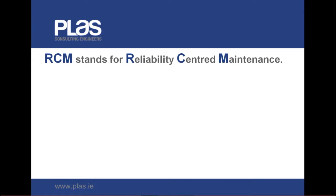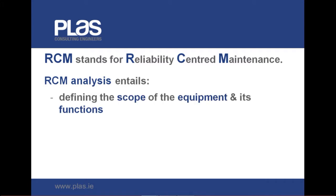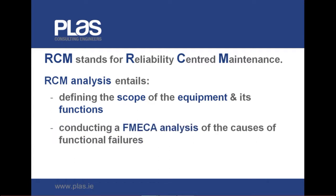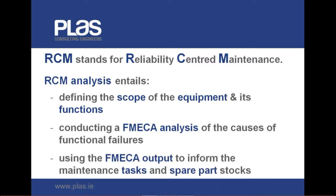RCM, or Reliability Centred Maintenance, is another smart and proven technique to help plan maintenance. In the case of RCM, the full scope of the equipment is defined and the various functions of the equipment's systems are clearly identified. The possible functional failures are listed, as are the failure modes that cause them, and the FIMICA is carried out on these. The results of this analysis are then used to specify preventive maintenance tasks and their scheduling, as well as the spares that are to be held in stock.